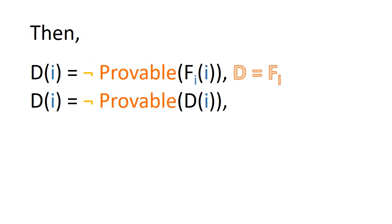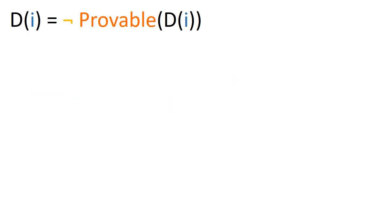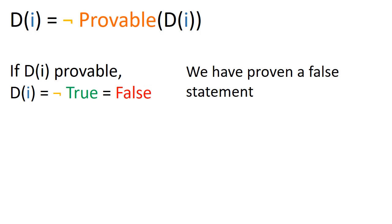We obtain d of i equals to not of provable of d of i. Then if d of i is provable, then d of i is false, meaning we just proved a wrong statement which cannot happen in a consistent logical system.